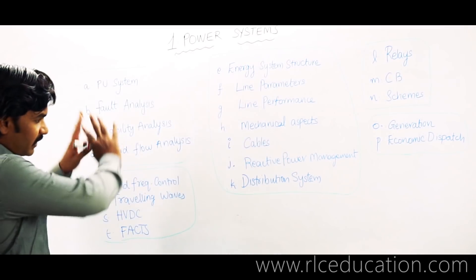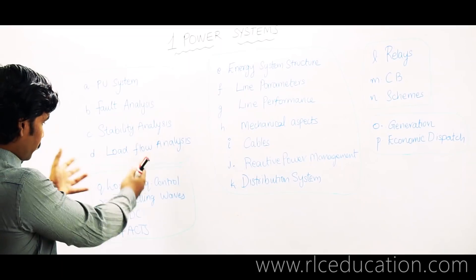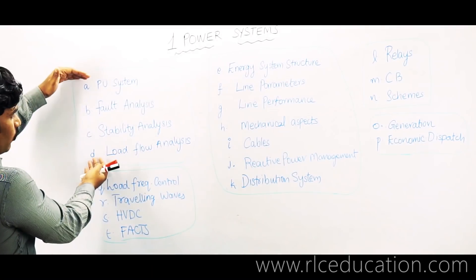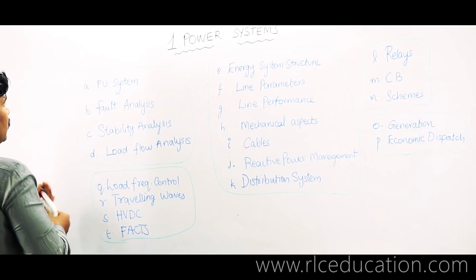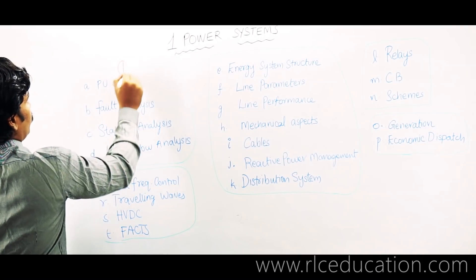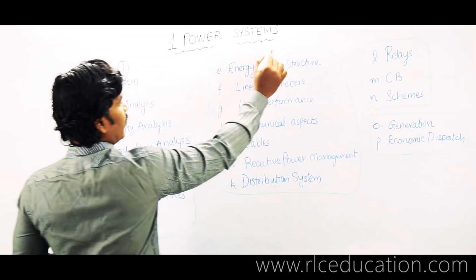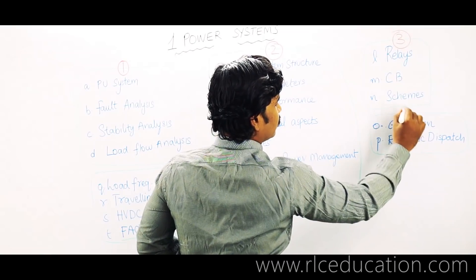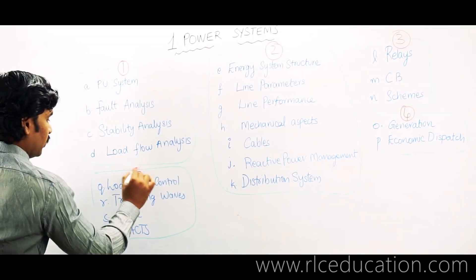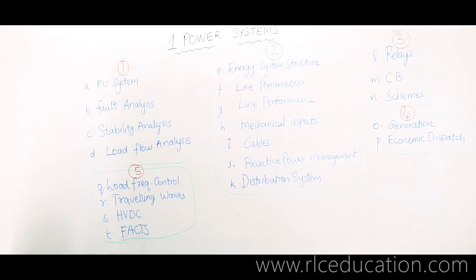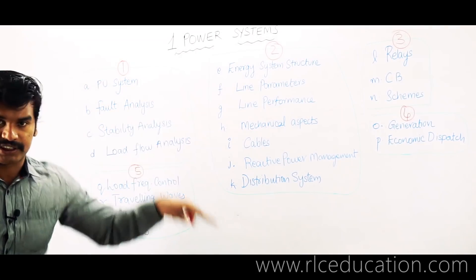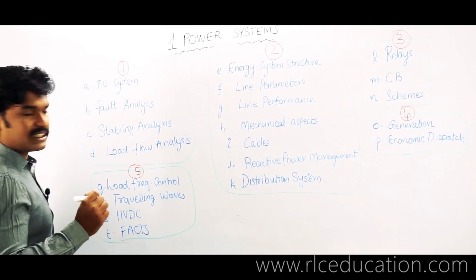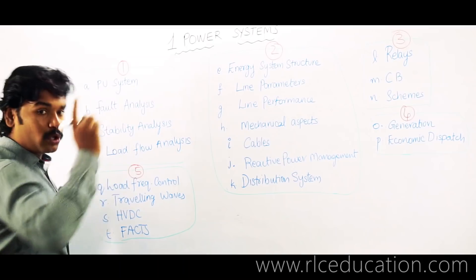I have divided all topics, up to T, into separate groups. Group one has four topics. The remaining topics are divided into group two, group three, group four, and group five. So the entire syllabus of power systems can be divided into five groups. When we talk about the GATE examination, you must not leave the first group, because each of these four topics carries very important questions.